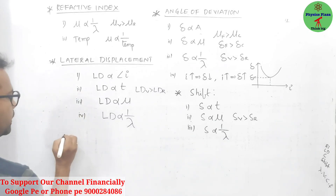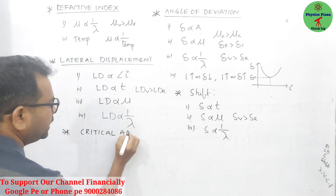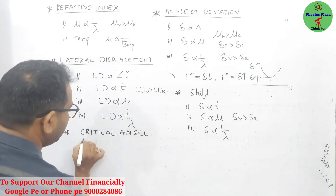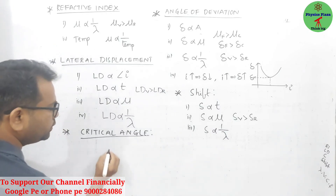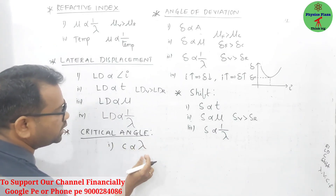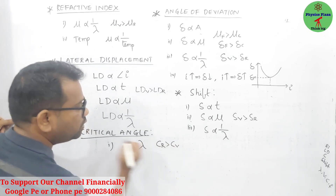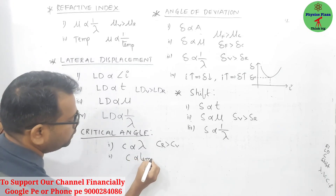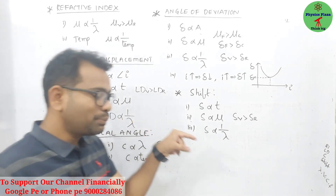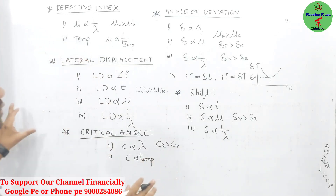We also missed critical angle, so let us cover that. Critical angle depends on two factors — wavelength and temperature. First, critical angle is directly proportional to wavelength — as wavelength is more for red color, critical angle is more for red color and least for violet. Second, critical angle is directly proportional to temperature — as temperature increases, critical angle also increases.